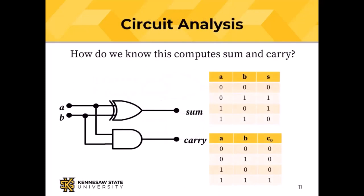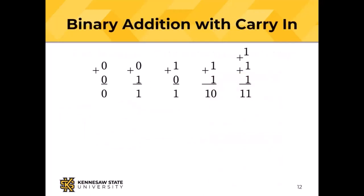We can look at the two truth tables and compare them to the circuit to confirm it computes exactly the sum and carry. For two inputs we can verify this with a truth table. However, we have a carry out but no way of dealing with a carry in, which means we can only add one pair of bits — and that's not really useful.